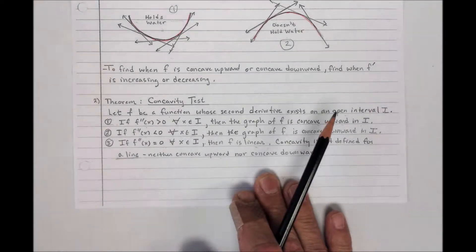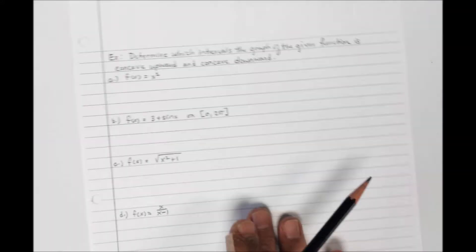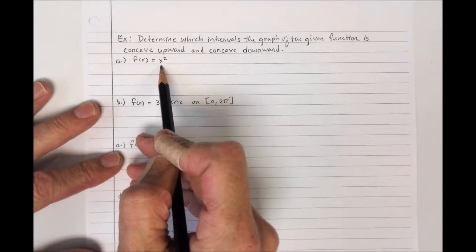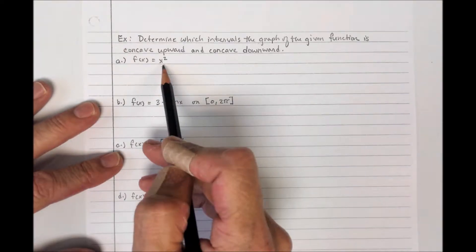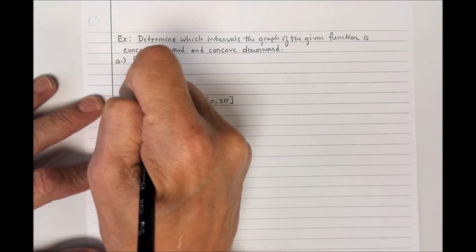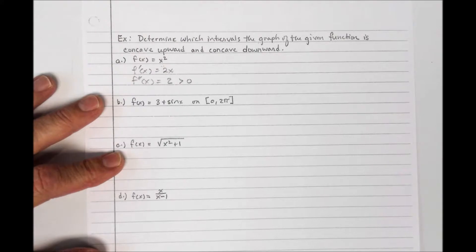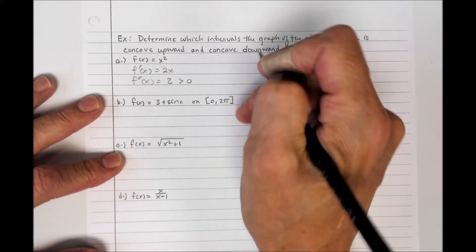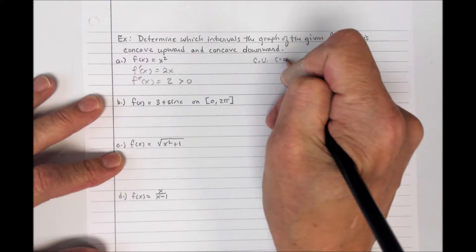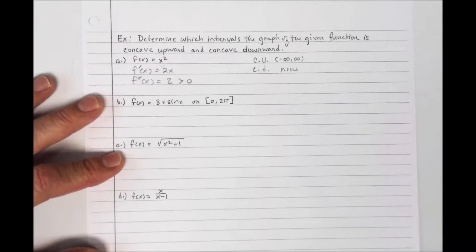Our first example is straightforward — the parent graph for the quadratic function. It's a parabola with vertex at (0,0) opening upward, so we already know it's concave upward. If I take the first derivative I get 2x; the second derivative is 2, which is greater than 0 for all x across the entire domain. So this is concave upward from negative infinity to infinity, and concave downward nowhere.